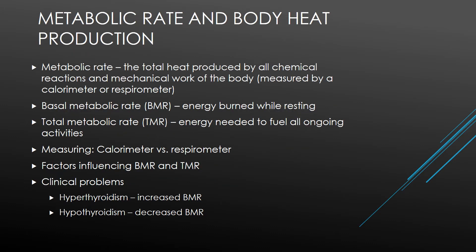Glucagon and epinephrine rise during fasting to stimulate hunger. Your body temperature rises and falls with BMR rate. Metabolic rate and body heat production: metabolic rate is the total heat produced by all chemical reactions and mechanical work of the body. Basal metabolic rate (BMR) is energy burned while resting. Total metabolic rate (TMR) is energy needed to fuel all ongoing activities. To measure this you use a calorimeter or respirometer. Some factors influencing BMR and TMR are age, gender, stress, and hormones.